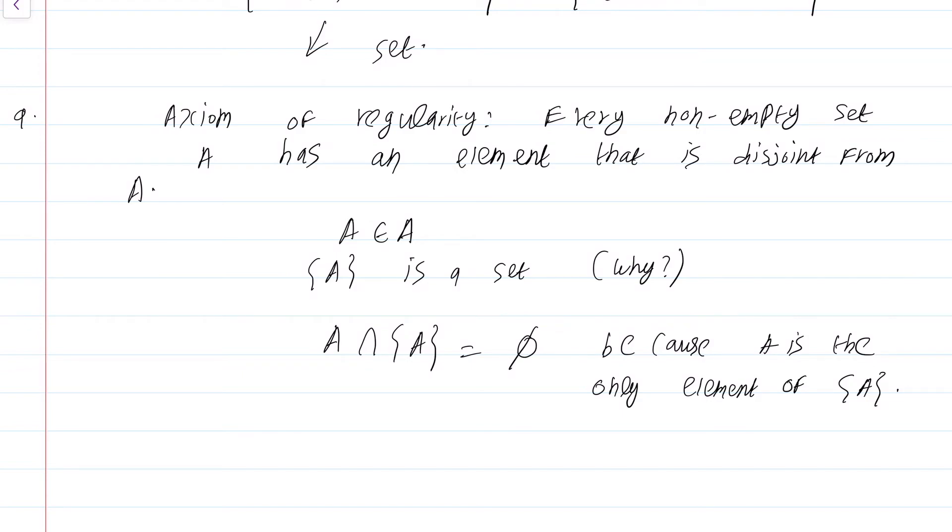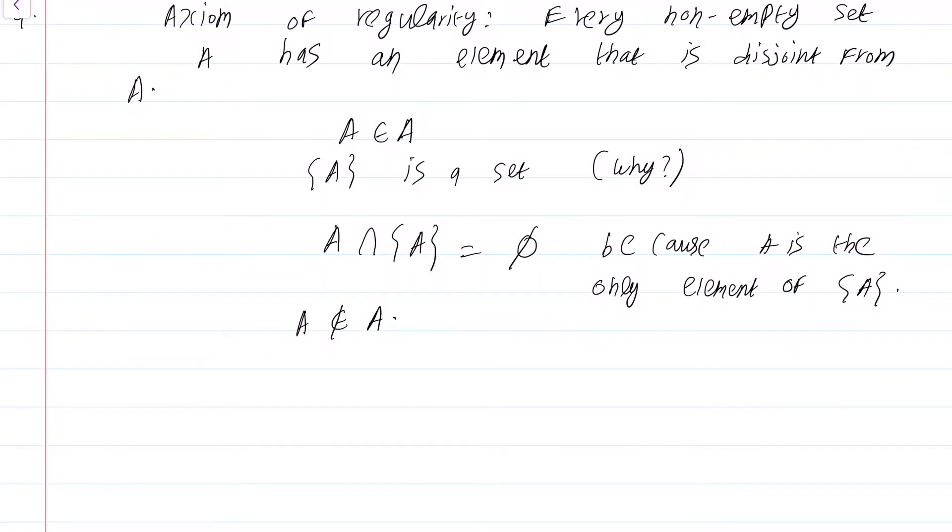From this, from the fact that A intersect {A} is empty, we can conclude that A is not an element of A. So, please pause the video and go through this proof again and make sure you understand what exactly is happening. It may seem like we are just manipulating symbols and that is true, but that is what rigorous checking of axioms, rigorous proofs from axioms actually entails. So, this axiom of regularity rules out the paradoxes of Bertrand Russell.